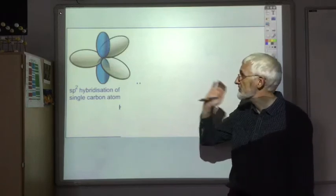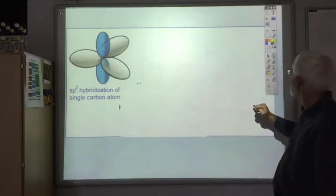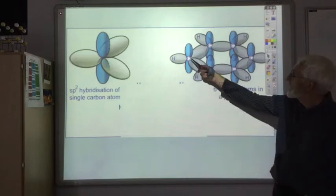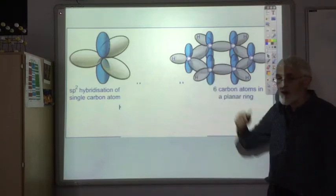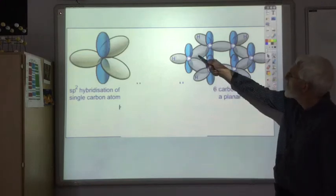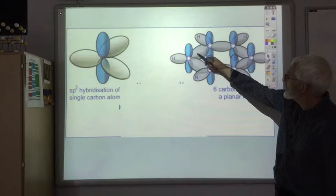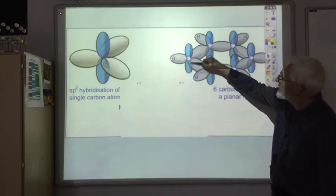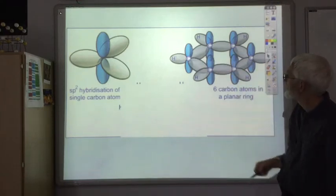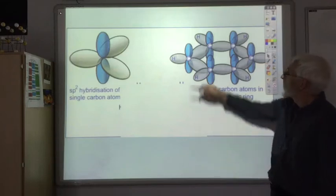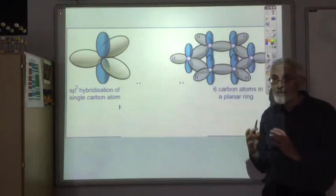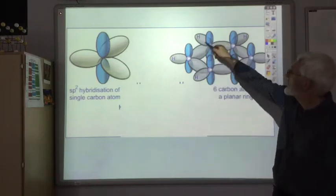We've got six carbon atoms that are like that. In the ring, the three sp2 hybridised orbitals form sigma bonds: one with each of the two adjacent carbons, and one with the hydrogen it's attached to, leaving an electron in the unhybridised p orbital. Now, the electron in this p orbital and the electron in this p orbital can form a pi bond by the sideways overlap of the two p orbitals.